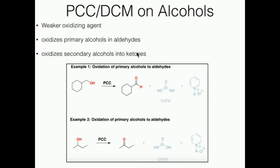So what does a weaker oxidizing reagent like PCC do? It takes an alcohol — only a primary or a secondary one — and turns the carbon-oxygen single bond into a carbon-oxygen double bond. This carbon right here has only one carbon attached, so this is a primary alcohol. We run PCC on it and this carbon-oxygen single bond is converted into a carbon-oxygen double bond. They've drawn the double bond going up, but they could have had it going at an angle — that would also be correct. The point is the carbon-oxygen single bond was converted into a carbon-oxygen double bond.